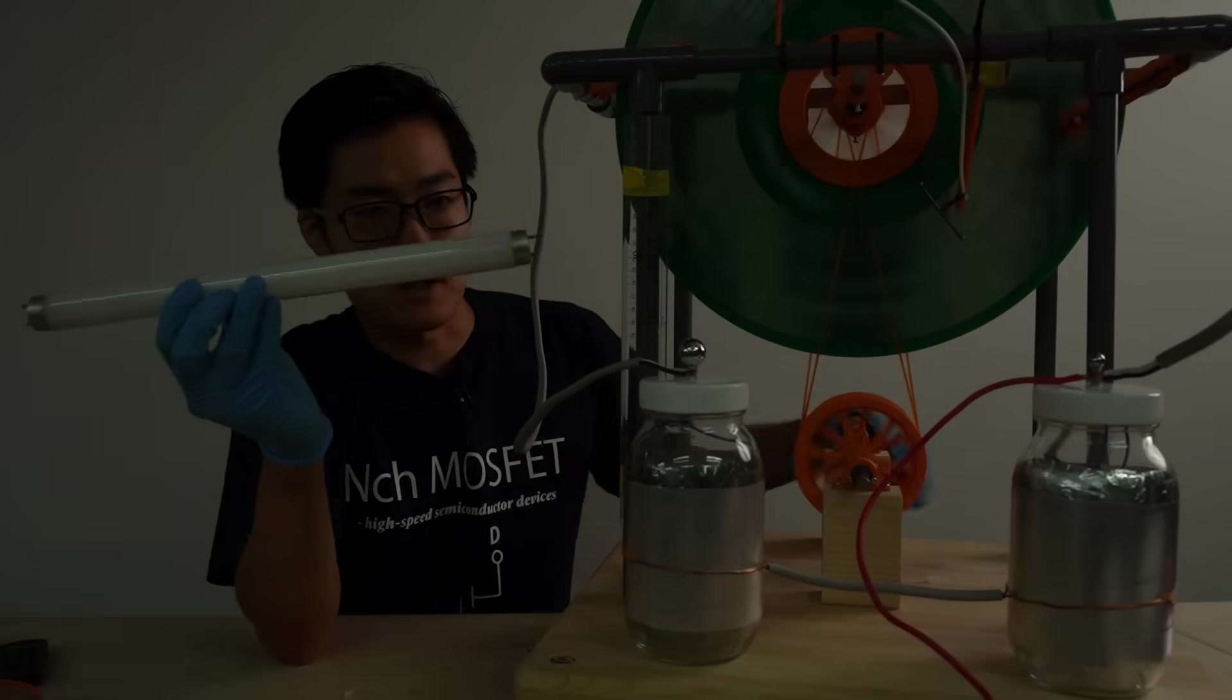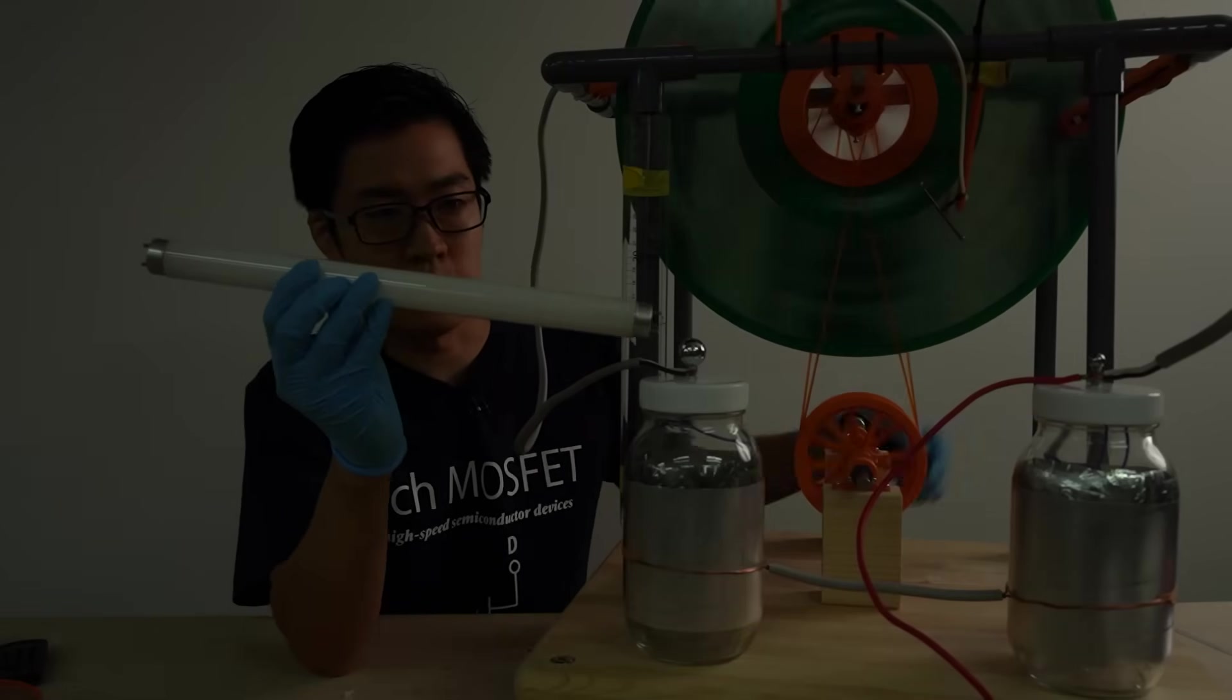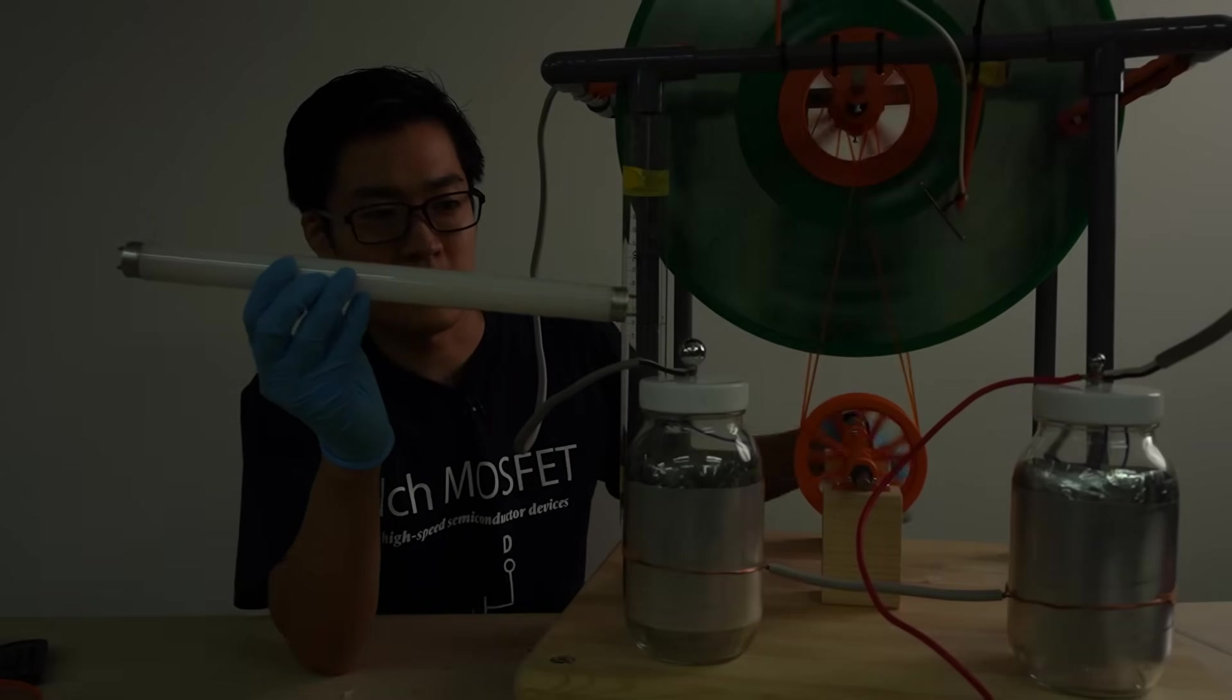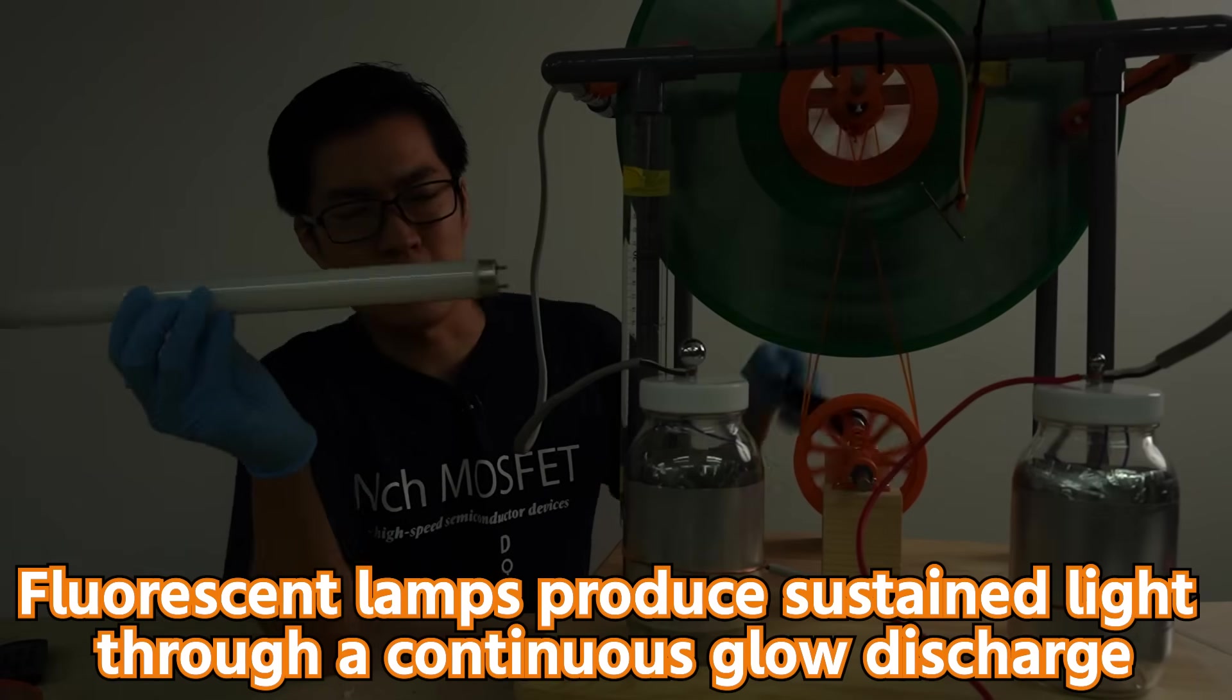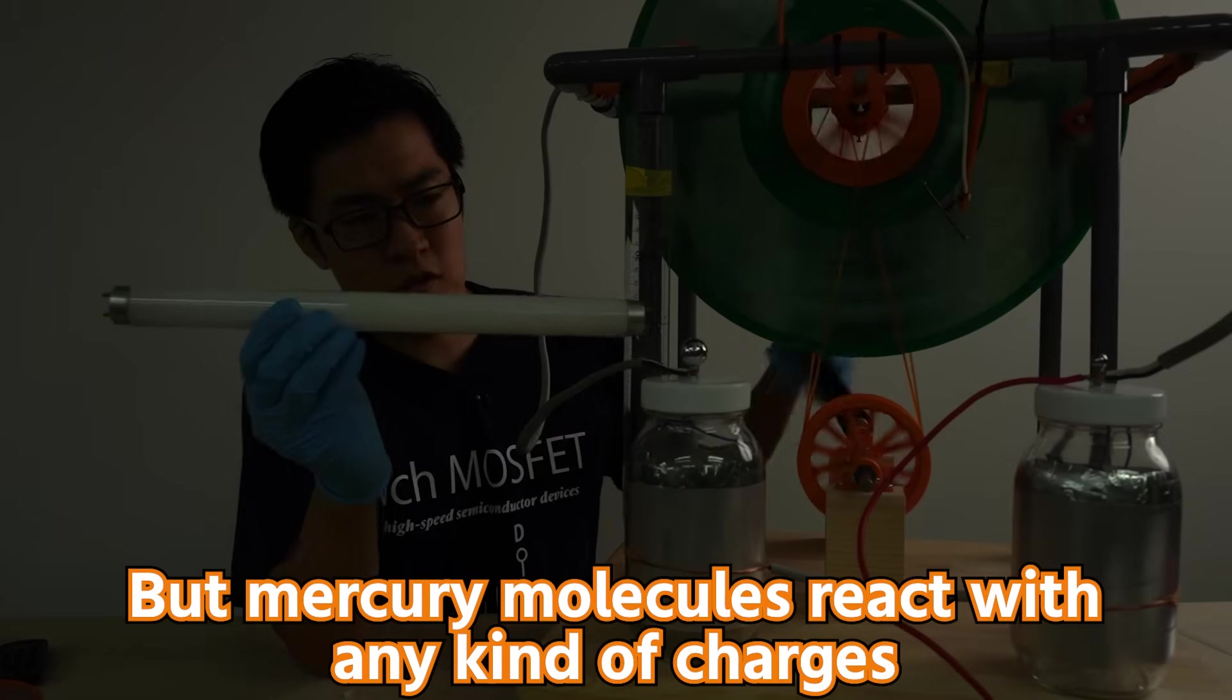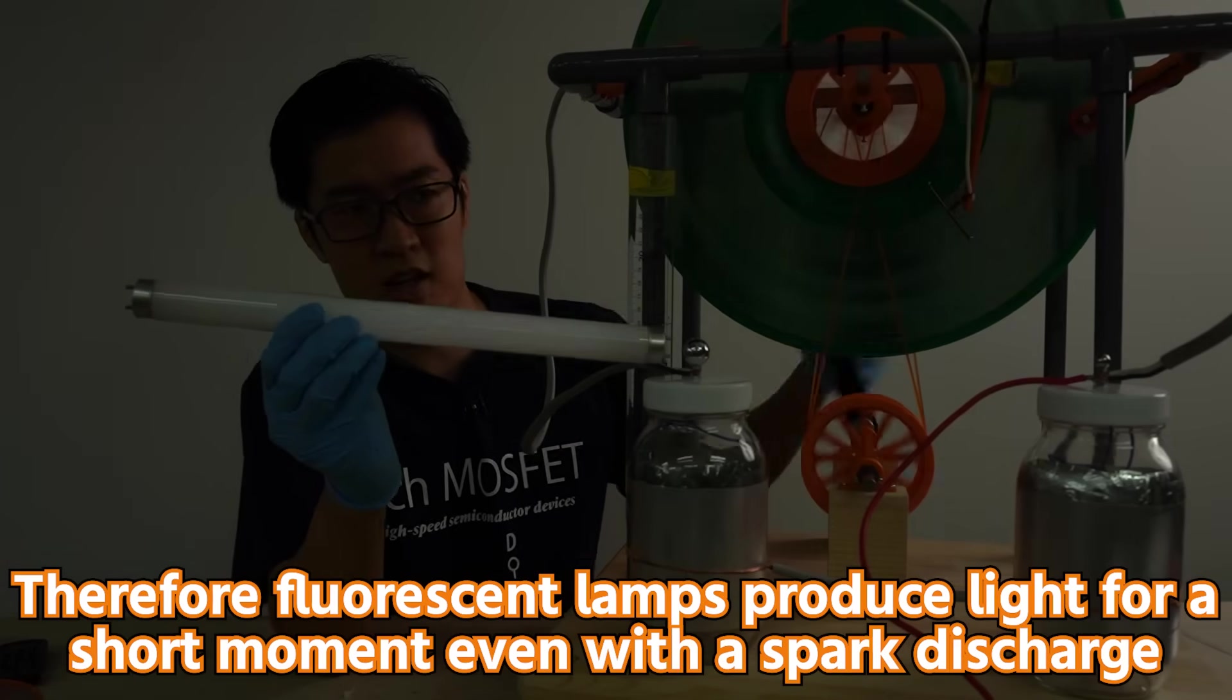I'm holding a fluorescent light right now. I'm bringing it close to the Leyden jar. Can you see? It's glowing. I can feel the little electric shocks in my hand. I feel like all the hair on my body is standing on end.